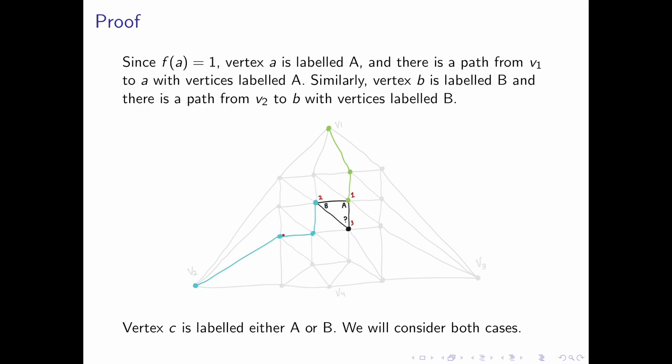Similarly, vertex B is labeled B and there's a path from v2 to B with vertices labeled B. This is shown in cyan and the path in green is the path for Alice.